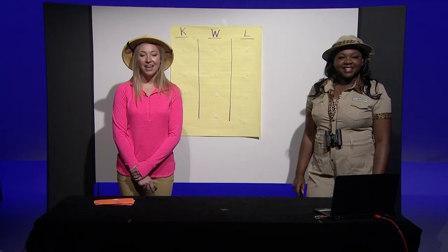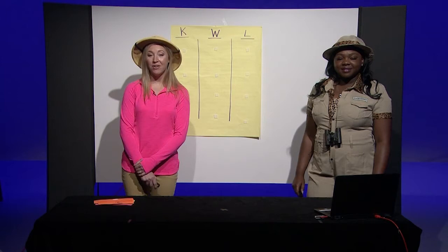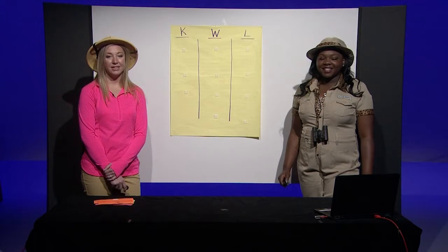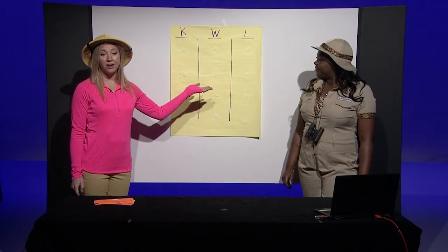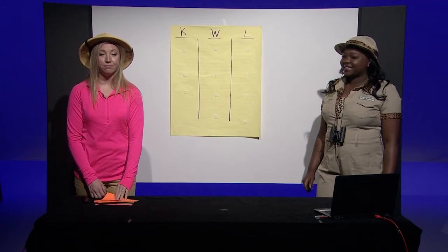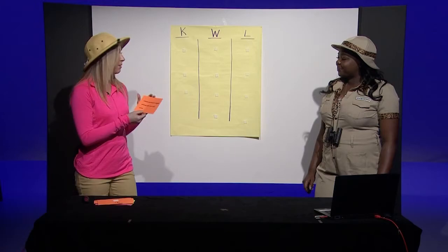Today's read aloud is called Insects that Glow and Sing. The insects we will learn about today communicate by glowing in the dark and singing to one another. Here's our KWL chart, which stands for what we know, what we wonder, and what we learn. Let's write down what we know and wonder about insects that glow and sing. We know that insects are small, six-legged animals with three body parts.